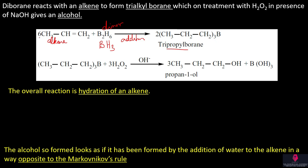B2H6 is added, and each BH3 unit reacts — giving three alkyl groups attached to boron. So we get R3B, that is trialkyl borane.